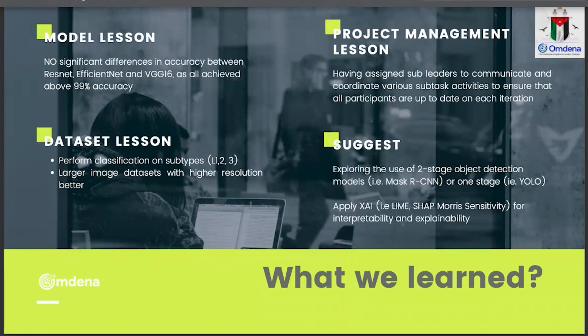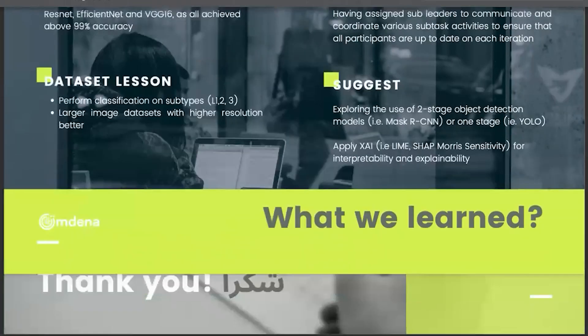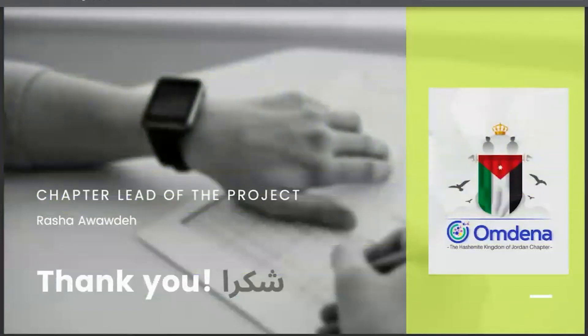Our suggestions are to explore different models — for example, two-stage object detection models like Mask R-CNN, or one-stage models like YOLO — and to apply different techniques for interpretability and explainability of our models. Thank you all.